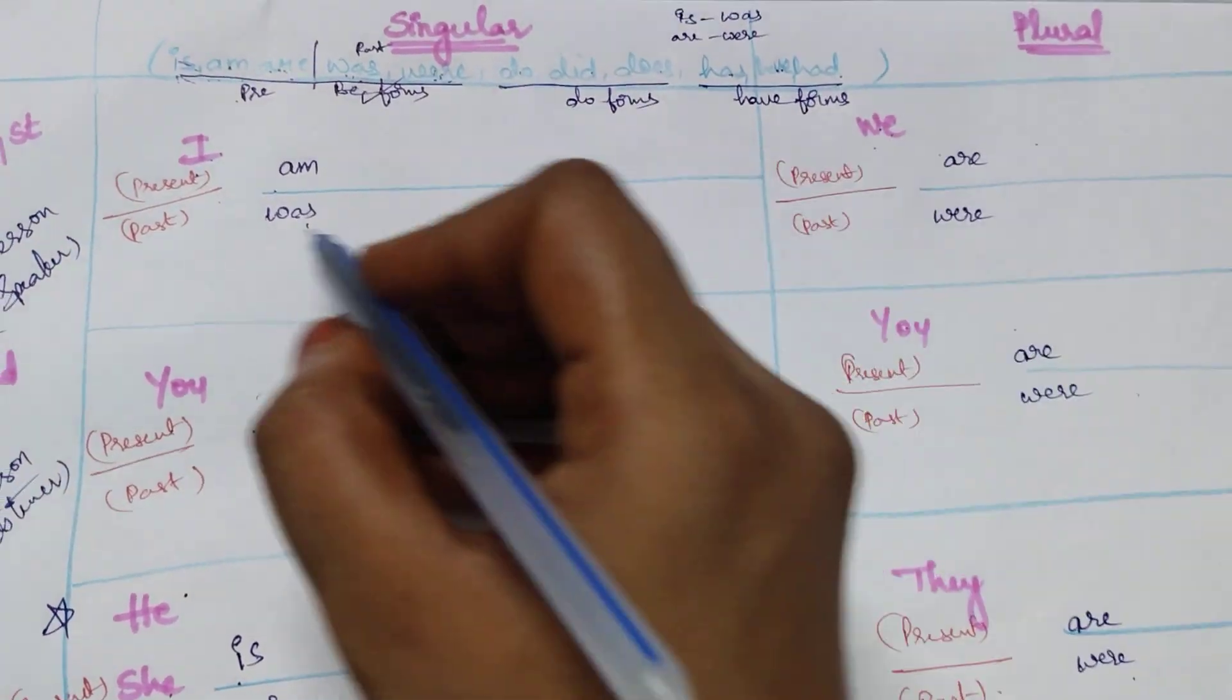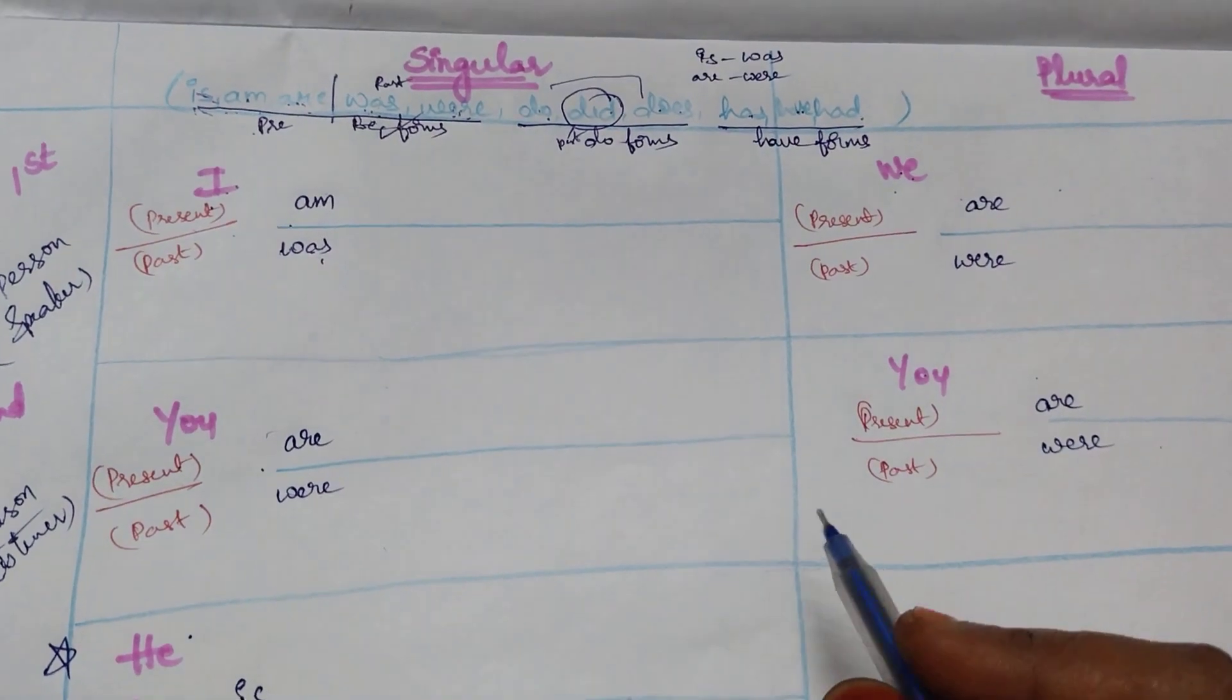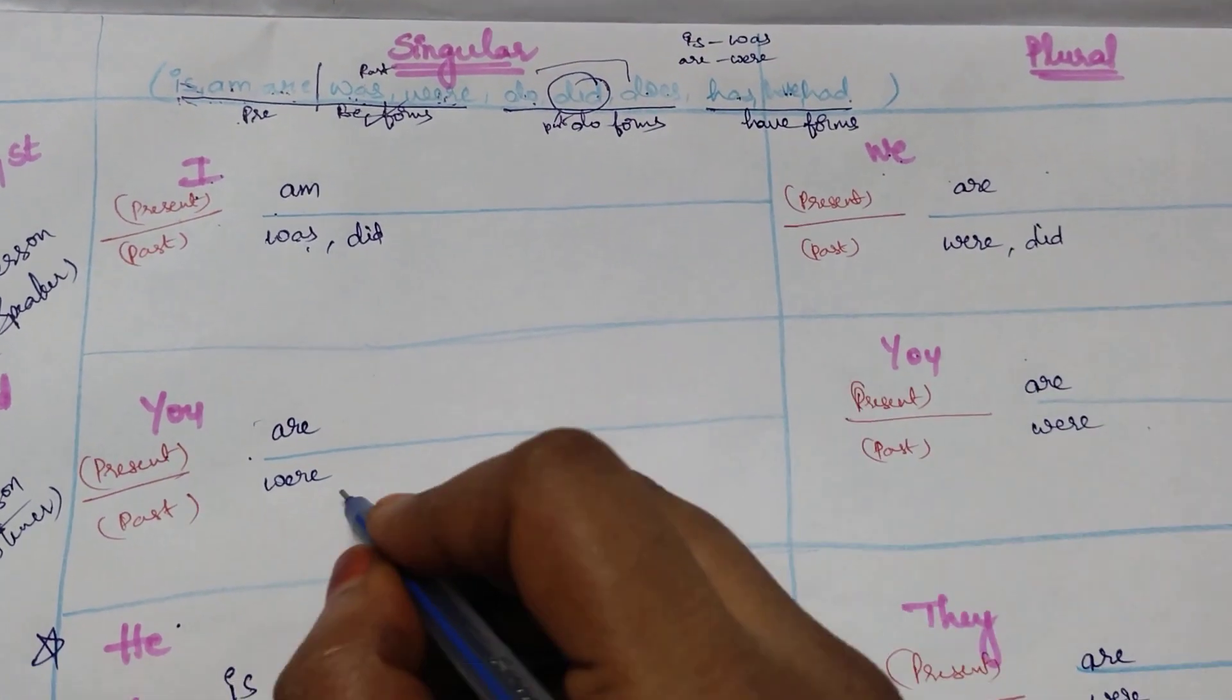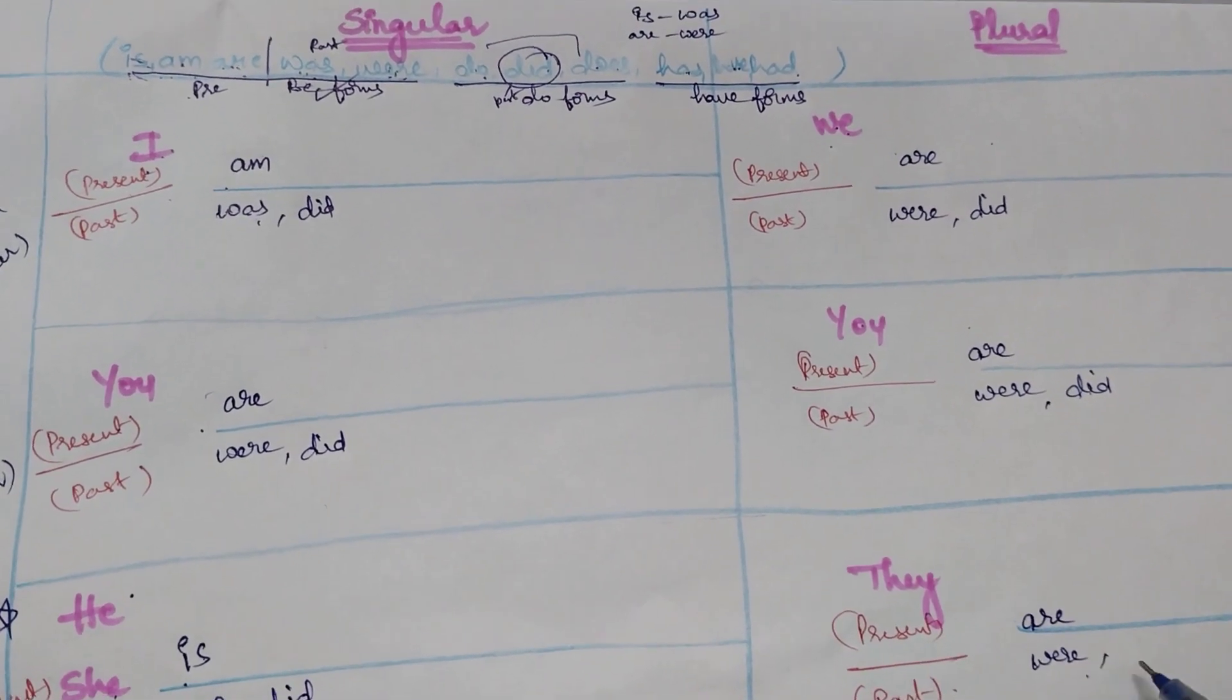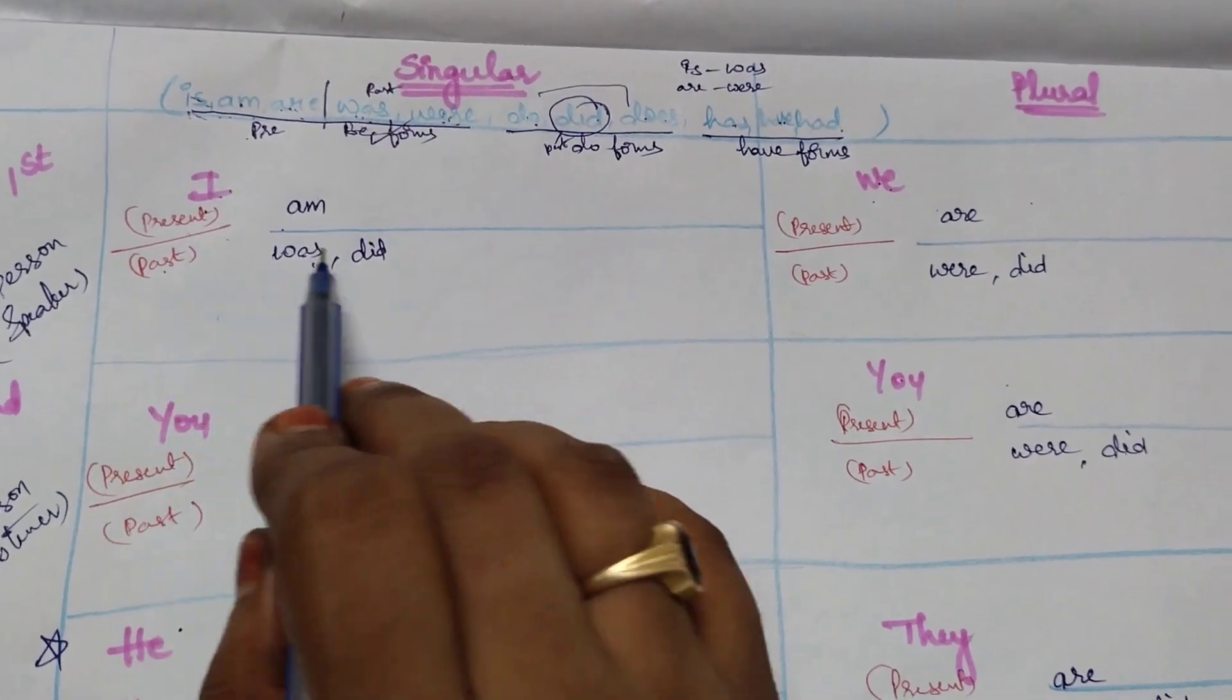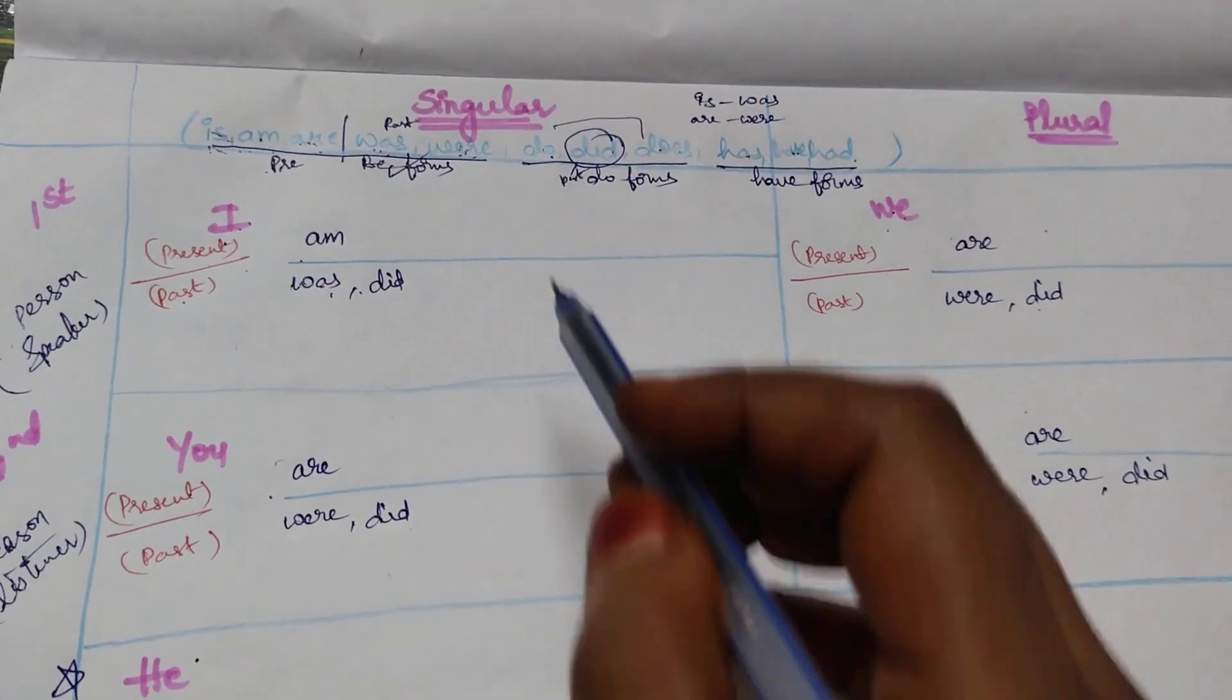Now do forms. In present only we talk about do or does. Did is for past. Question paper leaked, right? So did is for past. Whatever the subject might be, we need to use did. That's it. Now when you observe here, when it is past, no issue. Whatever the subject might be, you are just picking did.